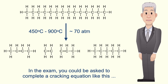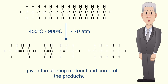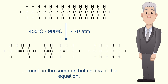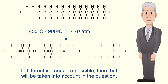In the exam you could be asked to complete a cracking equation given the starting material and some of the products. Remember that the total number of carbon and hydrogen atoms must be the same on both sides of the equation. If different isomers are possible then that will be taken into account in the question.